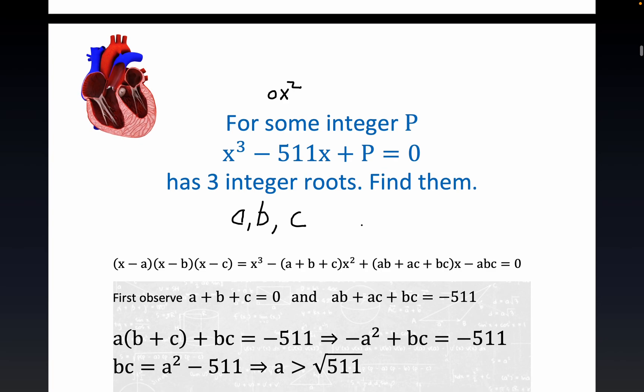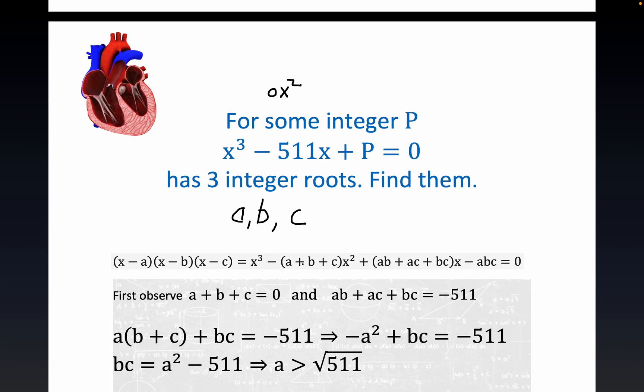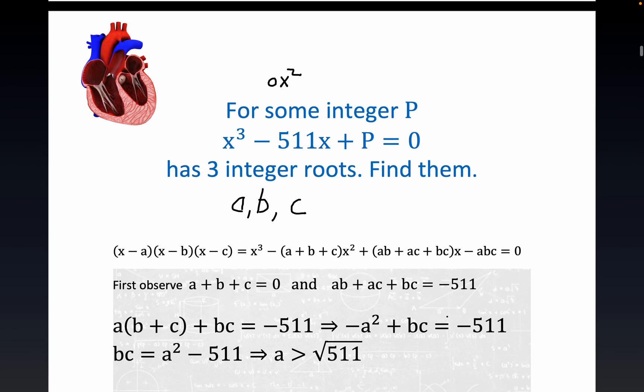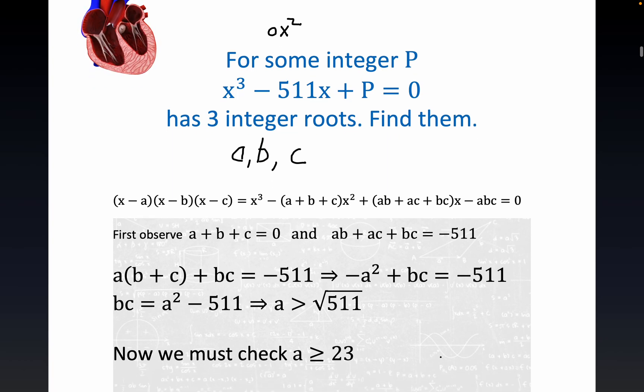But again this is underdetermined right? We have two equations and three unknowns. So how do you manage that? Well fortunately this 511 will provide sort of a bound for us.